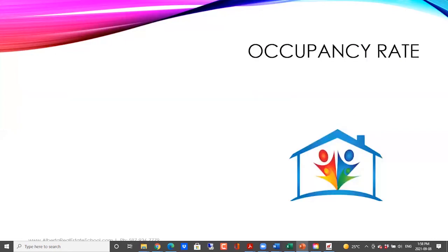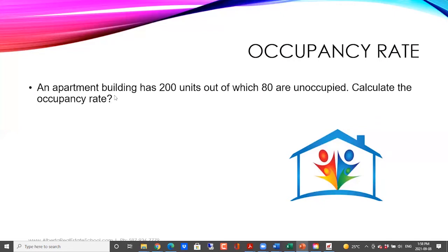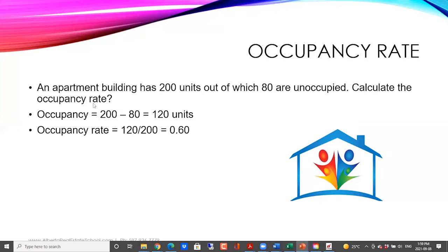Let's take a look at an example — the same apartment building with 200 units, out of which 80 are unoccupied, meaning they are vacant. We need to calculate the occupancy rate. First step: 200 minus 80 unoccupied gives us 120 units that are occupied and have been rented out. Then we calculate the occupancy rate: 120 divided by 200 gives us 0.60. Multiplying by 100 gives us a 60% occupancy rate.